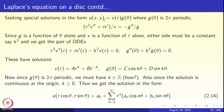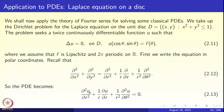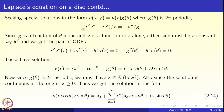In equation 2.13, we look for solutions of the form u = v(r)·g(θ), where g(θ) is a 2π-periodic function — the method of separation of variables. Substituting, the first term gives v″(r)g(θ), the second gives v′(r)g(θ)/r, and the third gives v(r)g″(θ)/r². Rearranging, r²v″/v + rv′/v = −g″/g. The left side depends only on r, the right only on θ, so both equal a constant k².